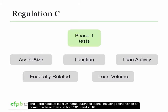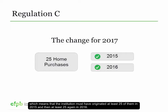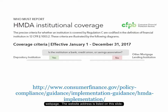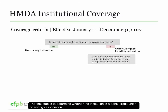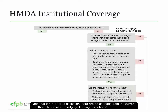Additionally, the institution must originate at least 25 home purchase loans, including refinancings of home purchase loans, in both 2015 and 2016. The only change for 2017 is the addition of the threshold of at least 25 home purchase loans, which means the institution must have originated at least 25 in 2015 and then at least 25 again in 2016. Let's walk through the 2017 HMDA institutional coverage chart available on the Bureau's dedicated HMDA implementation webpage. The first step is to determine whether the institution is a bank, credit union, or savings association. If it's neither of these, then it would fall under Other Mortgage Lending Institution. Note that for 2017 data collection, there are no changes from the current rule that affects other mortgage lending institutions.